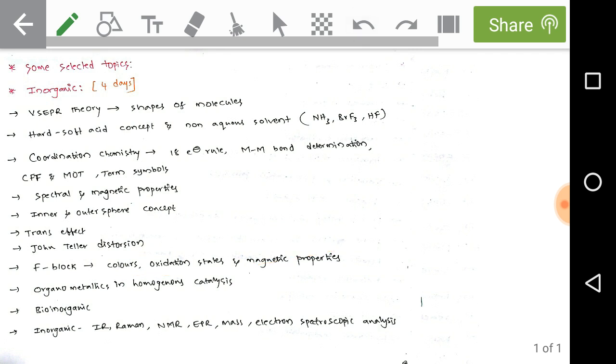Inner and outer sphere mechanisms, trans effect, Jahn-Teller distortion, these are all very important topics. Next, f-block elements: colors of f-block elements, oxidation states of the lanthanides and actinides, and magnetic properties. Next, organometallics in homogeneous catalysis. Next, bio-inorganic part is very important. In bio-inorganic it takes just two to three hours to get command. Next, inorganic spectroscopy, that means structural determination of inorganic compounds. We need to check IR, Raman, NMR, EPR, mass, electron spectroscopy, etc. Just learn the basics of these spectroscopic analysis.